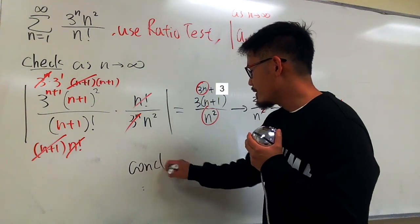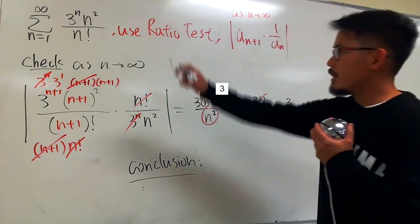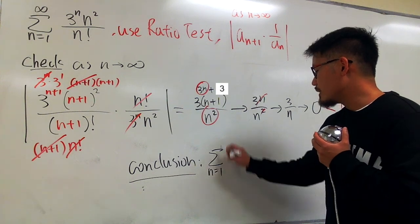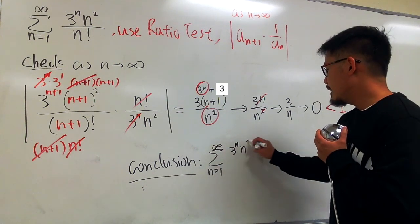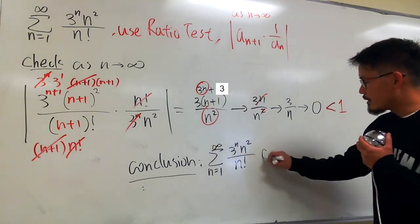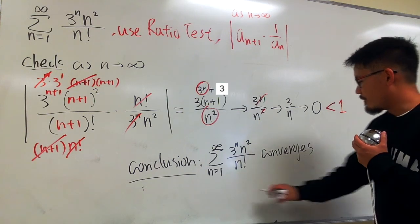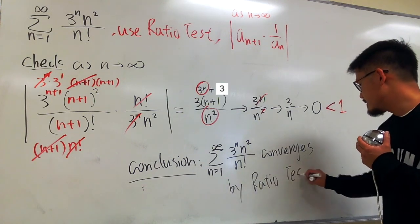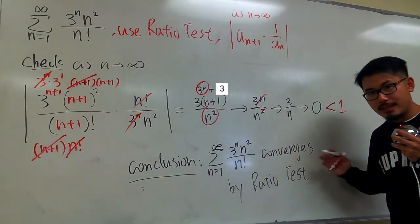Now I'm going to write down the conclusion. The original sigma, when n goes from 1 to infinity, 3^n times n squared over n factorial, converges by the ratio test. That's it.